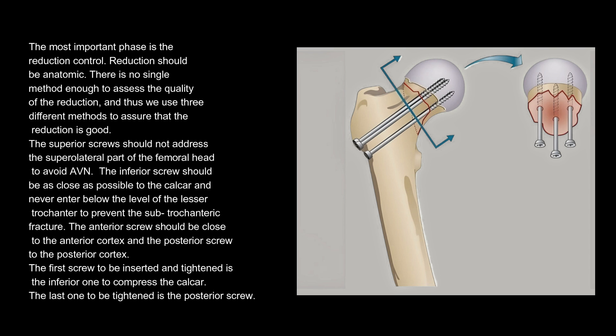The superior screws should not address the superlateral part of the femoral head to avoid AVN. The inferior screw should be as close as possible to the calcar and never enter below the level of the lesser trochanter to prevent sub-trochanteric fracture. The anterior screw should be close to the anterior cortex and the posterior screw to the posterior cortex. The first screw to be inserted and tightened is the inferior one to compress the calcar; the last one to be tightened is the posterior screw.